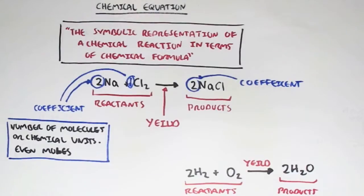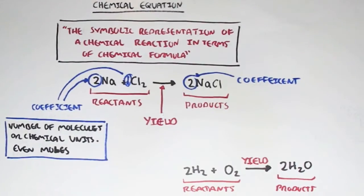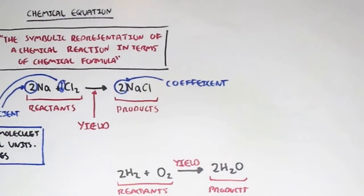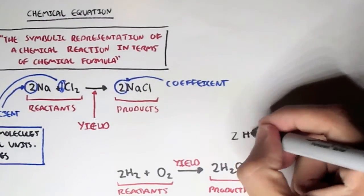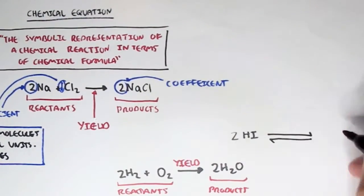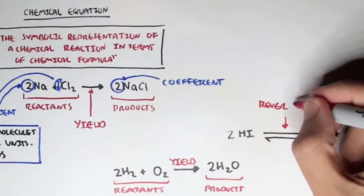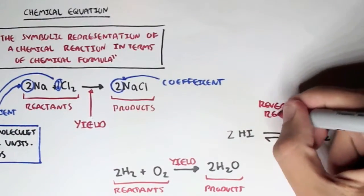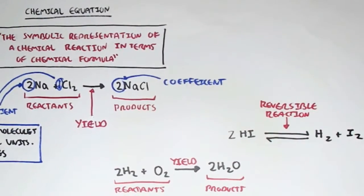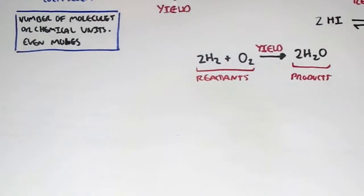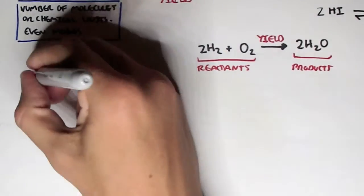However, a reaction can also be reversible. For example, here we have two hydrogen iodides, which can yield hydrogen gas and iodide gas. But this reaction is reversible because of the two arrows pointing back and forth, so it can proceed forward or it can proceed backwards.